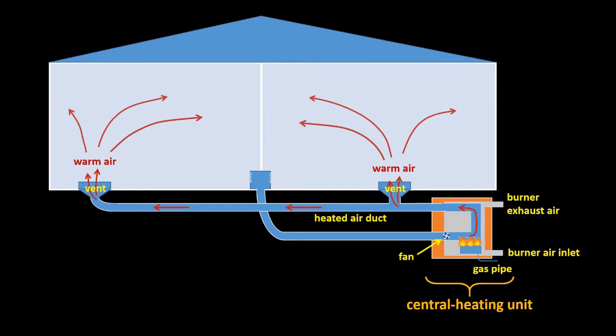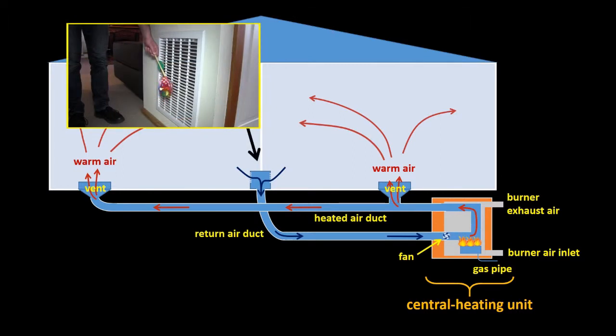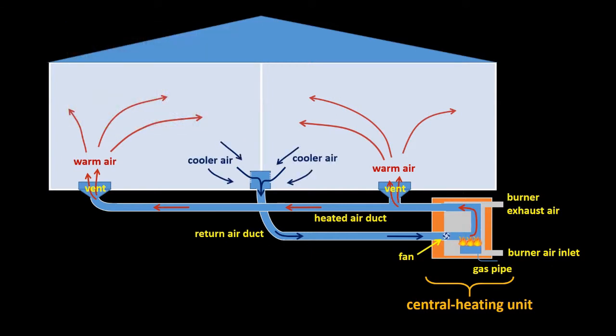Every central heating system has at least one return air duct so that the air can also return to the central heating unit and be reheated. The inlet for the return air duct is typically placed away from the warm air vents and so the returning air is typically a little cooler than the incoming air.